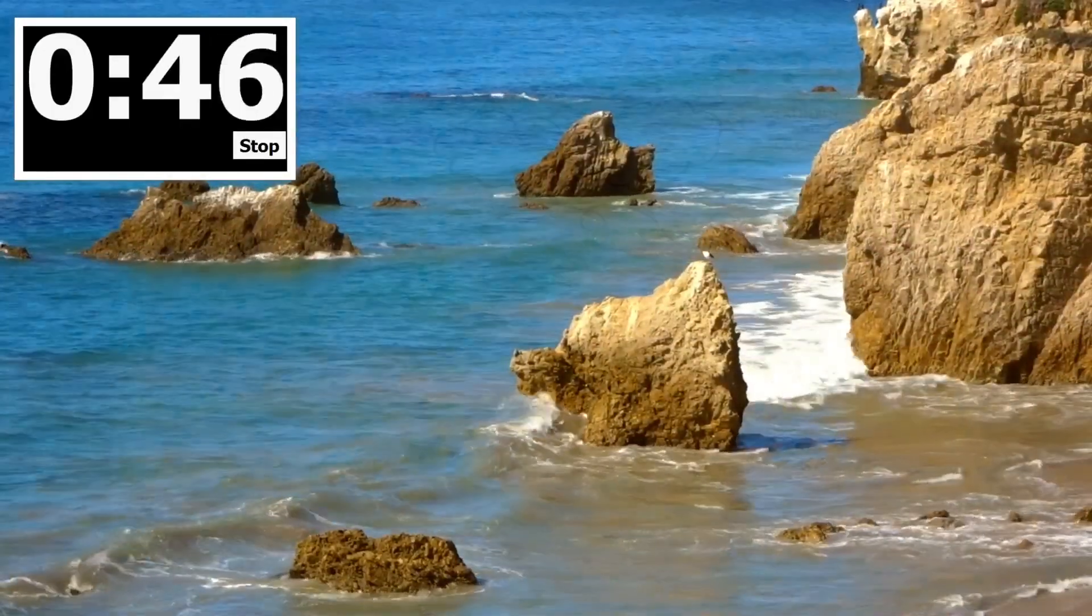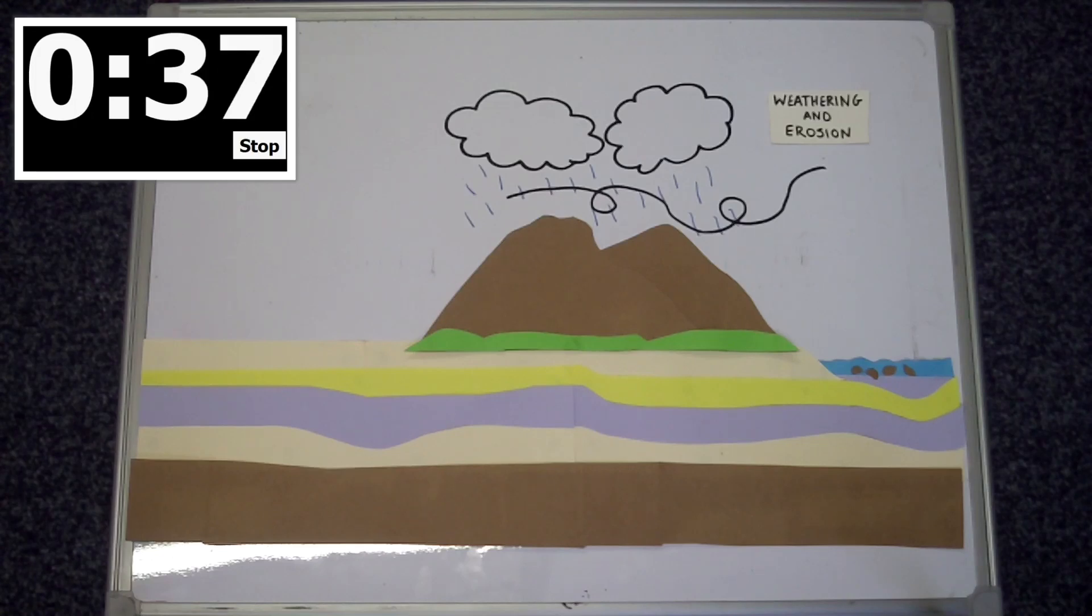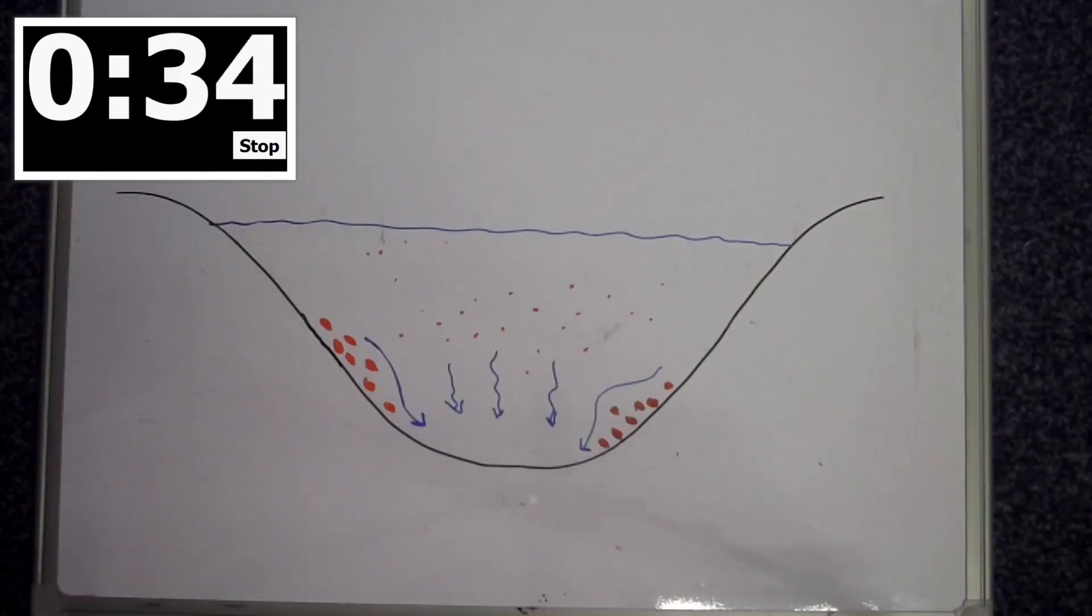Weathering and erosion breaks down older rocks and this broken down material creates sediment. This sediment can be transported by rivers or ice or wind. Eventually that material is deposited.